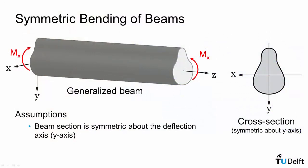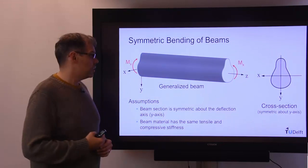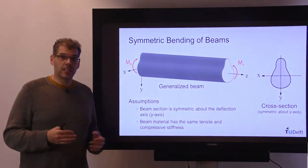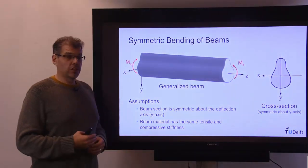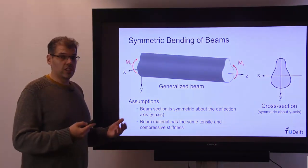So our beam will bend in the y direction, so we need symmetry of that cross-section along the y-axis. The second assumption we're going to make is that the beam has the same tensile and compressive stiffness. The Young's modulus is the same in both tension and compression, and the reasoning for this will become apparent in a bit, but for now those are our two assumptions for a symmetric beam that we will use to derive the stress and strain distribution.